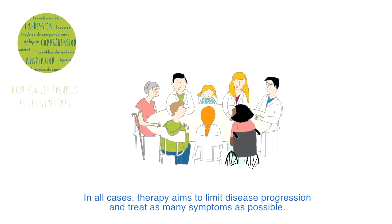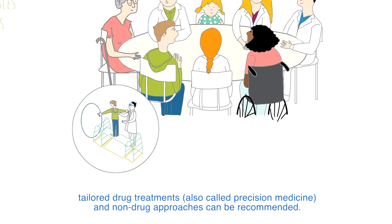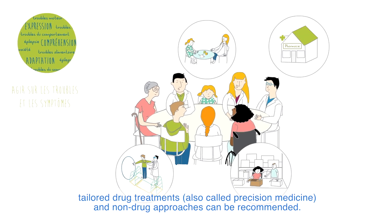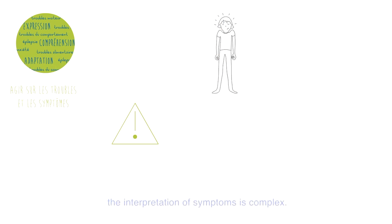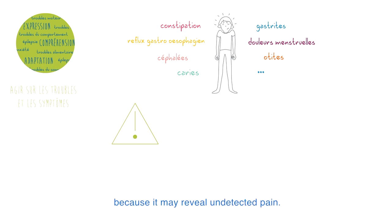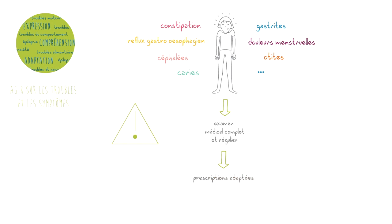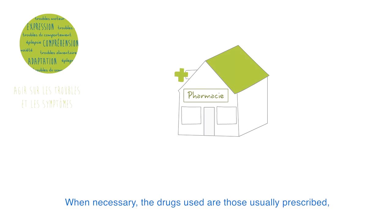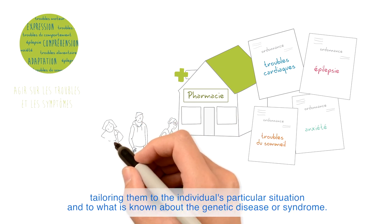In all cases, therapy aims to limit disease progression and treat as many symptoms as possible. Depending on the individual's situation, tailored drug treatments — also called precision medicine — and non-drug approaches can be recommended. It is important to note that because people with intellectual disabilities have difficulty expressing themselves, the interpretation of symptoms is complex. An abnormal behaviour should not systematically be qualified as a psychiatric disorder, because it may reveal undetected pain. A complete medical examination must be carried out with the prescription of an appropriate treatment, tailoring them to the individual's particular situation and to what is known about the genetic disease or syndrome.